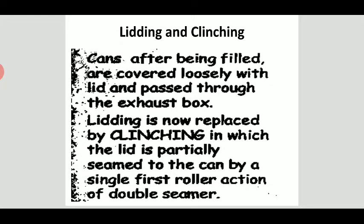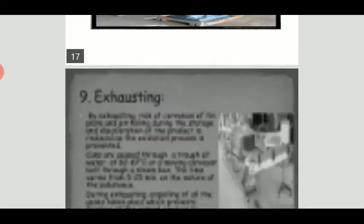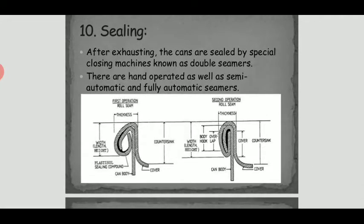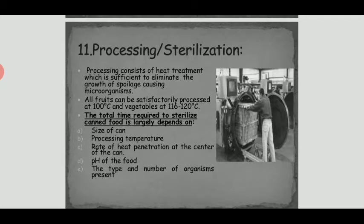Lidding and clinching follows — cans after being filled are covered loosely with lids and passed through exhaust boxes. During exhausting, the risk of corrosion of tin plate, pin-holing during storage, and discoloration of the product is reduced. Cans are passed through a steam box at 82°C to 87°C on a moving conveyor belt for 5 to 25 minutes. After exhausting, cans are sealed by special closing machines known as double seamers.